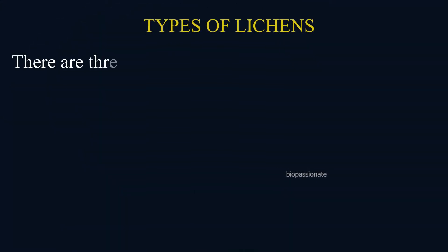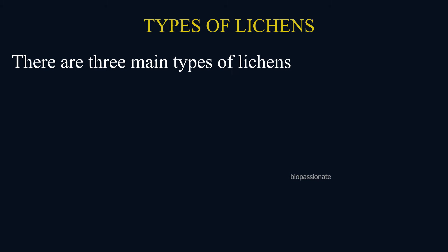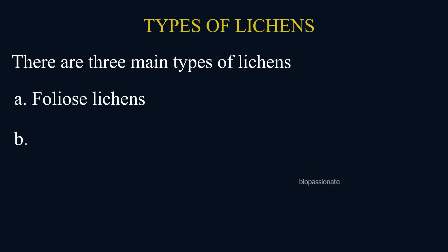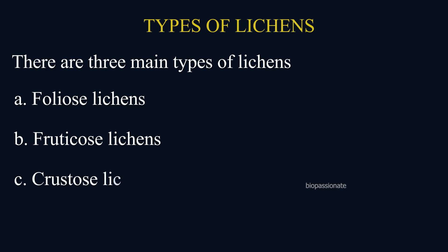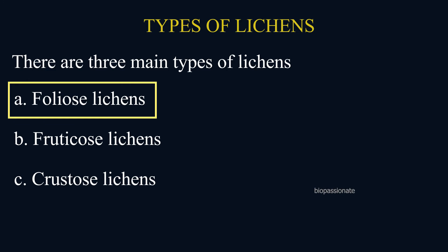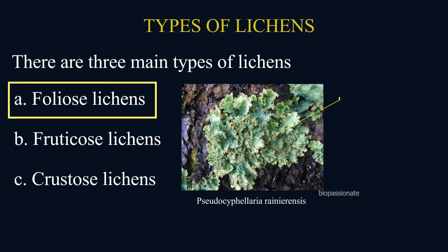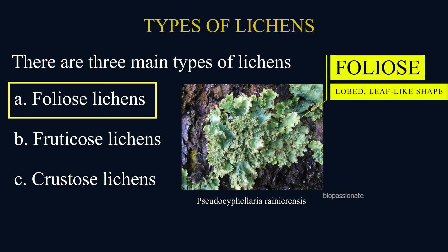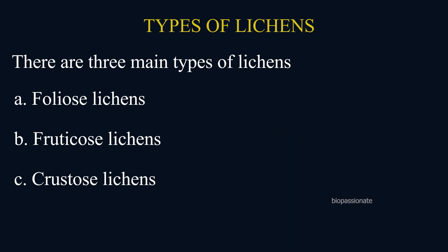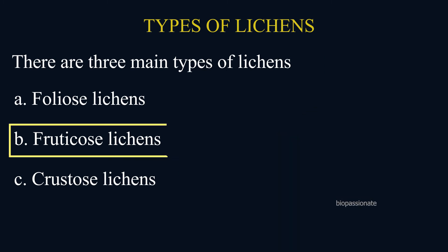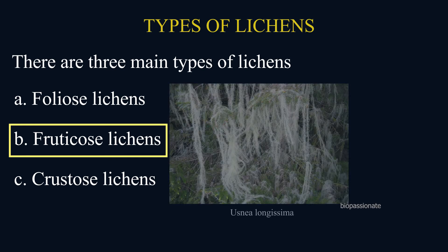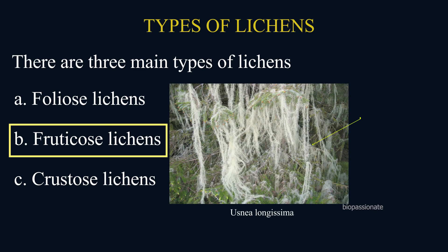There are three types of lichens: foliose, fruticose, and crustose. Foliose lichens possess lobed, leaf-like shaped thalli. Fruticose lichens possess upright, cup-like, or pendulous branched thalli.